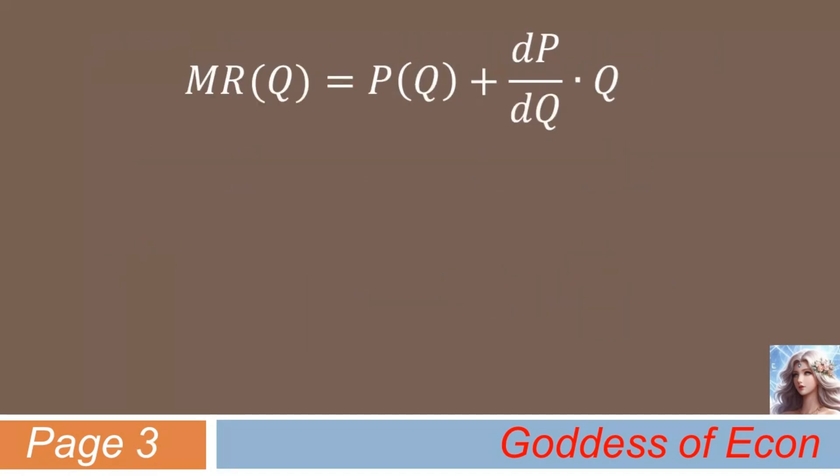Now, let's do some more math to find a linkage between MR and the price elasticity of demand. First, let's factor out P of Q from the right-hand side of the equation. Some of you may be thinking, how do we factor out P of Q when it does not appear at all in the second term? Well, we can do it if we use some math trick as follows. Do you see it? What a neat trick it is. By inserting P in the denominator of the fraction in the second term, we succeeded in factoring out P of Q, at least artificially.